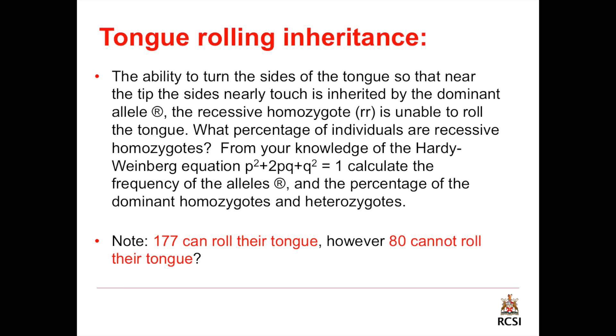Note that there are 177 who can roll their tongue, however there are 80 who are unable to roll their tongue. Always remember to use these equations in genetic problems: p plus q equal 1 and the binomial equation.